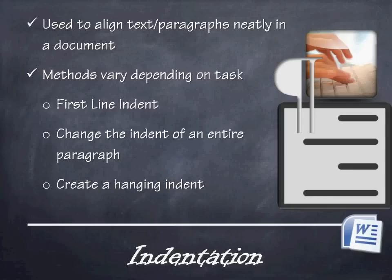The first thing we're going to take a look at is indentation. This is when you take your Microsoft Word document and push some of the text away from the border, from the margin. You can use this to align your text and paragraphs neatly. Sometimes you want to make the first line indented — that's useful when writing an essay. Other times you might want to change the indentation of an entire paragraph, such as when you're quoting a large section of text.